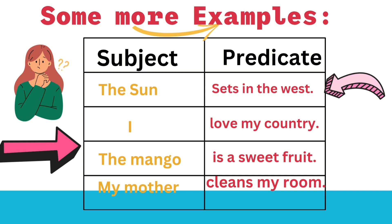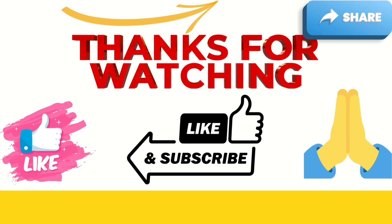Some more examples: 'The sun sets in the west' — the sun is the subject, sets in the west is the predicate. 'I love my country' — I is the subject, love my country is the predicate. 'The mango is a sweet food' — the mango is the subject, is a sweet food is the predicate.